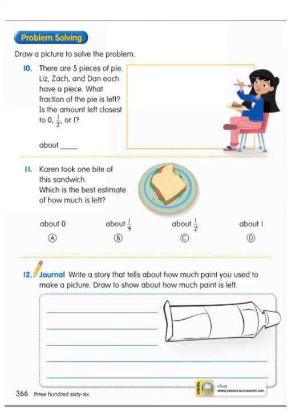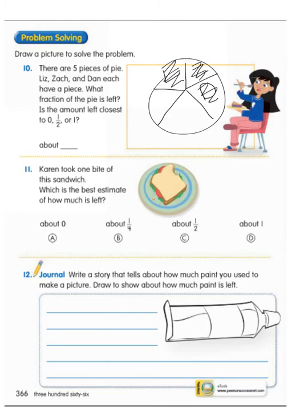All right, number 10. Draw a picture to solve the problem. There are five pieces of pie. Go ahead and draw your pie in this box. Liz, Zach, and Dan each have a piece. What fraction of the pie is left? Is the amount left closest to zero, one half, or one? So draw your pie. One. There's my five pieces. Liz has one, Zach, and Dan. So this is what's left. Is that closest to zero, half, or one left?